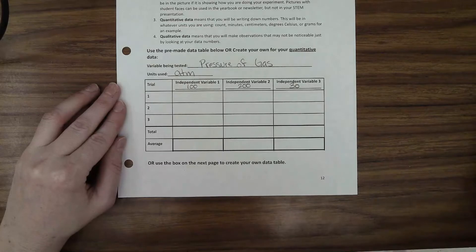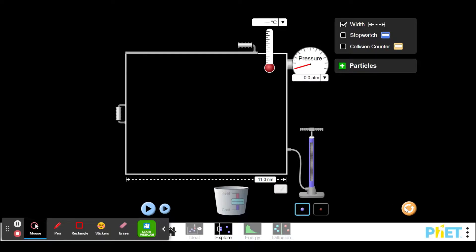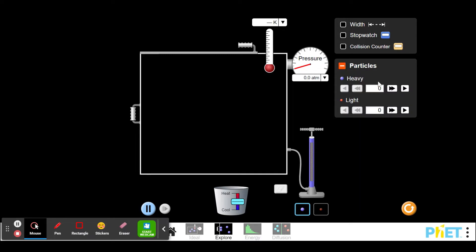So I'll go to the PhET lab and I will choose which one to do. I'm going to go ahead and add 50 particles, 100 particles, and then I'm going to wait for that to equilibrate.